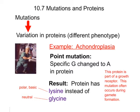That specific point mutation results in a different amino acid being produced in that protein. That protein happens to be part of a growth receptor, so it functions differently when glycine is there instead of lysine. Lysine is polar and basic, while glycine is neutral, and they behave very differently.